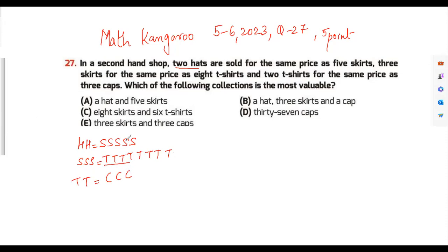Whenever we have this question, I would prefer you put numbers to it so that it becomes easy to calculate. Now this is five and this is two, so we should take a number which is like an LCM of both. Let's just take a number 20. So let's just say the hat is 10.